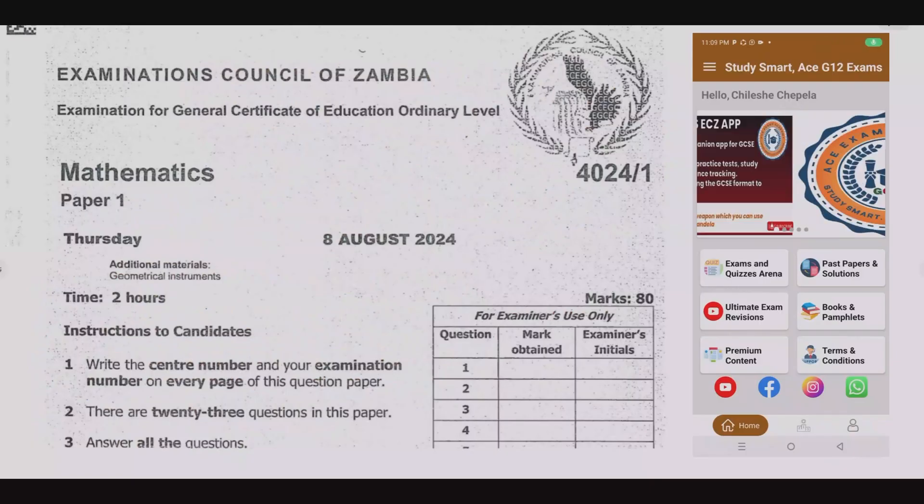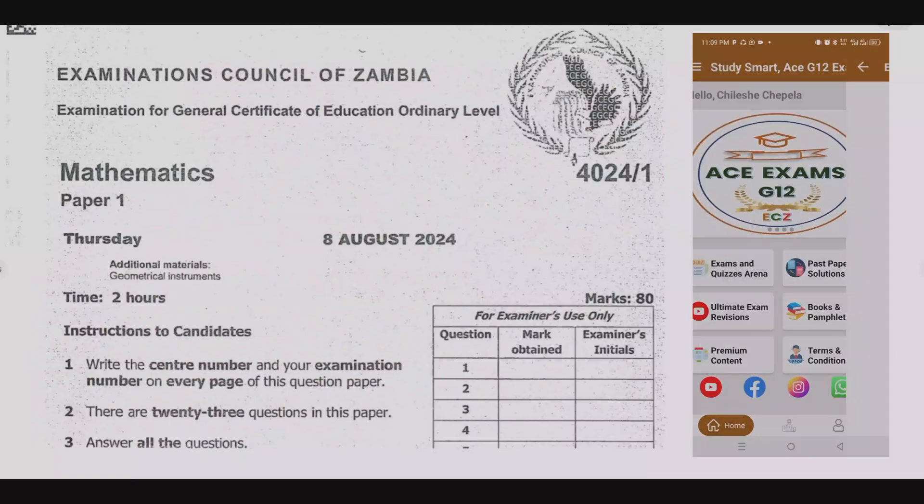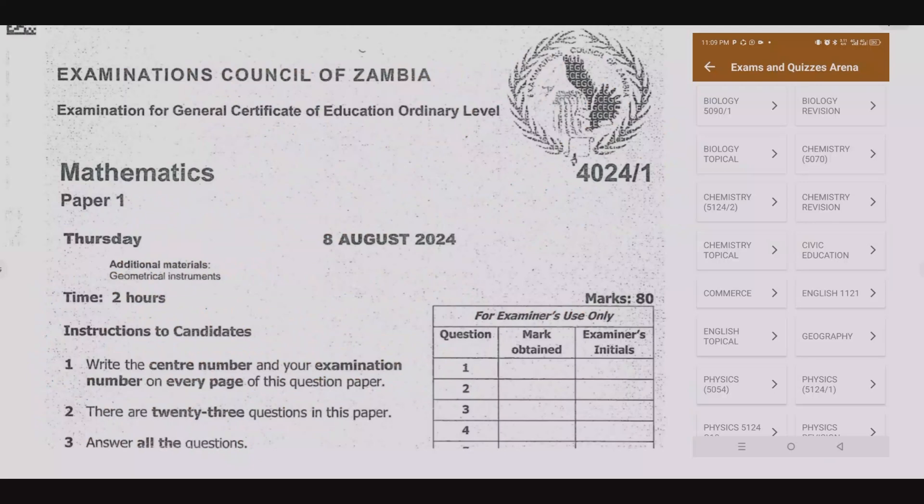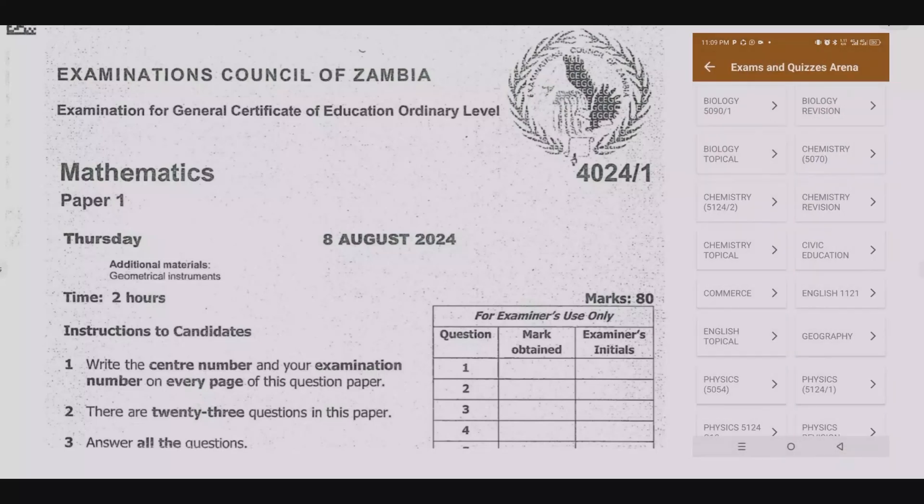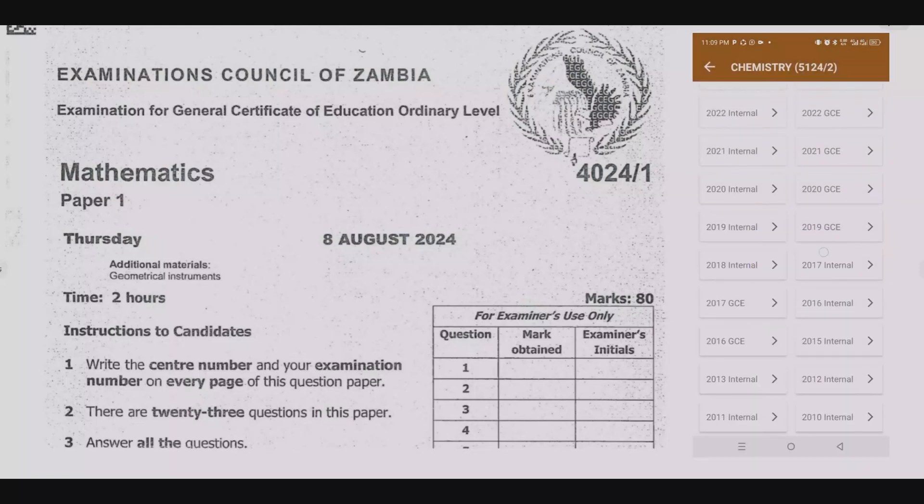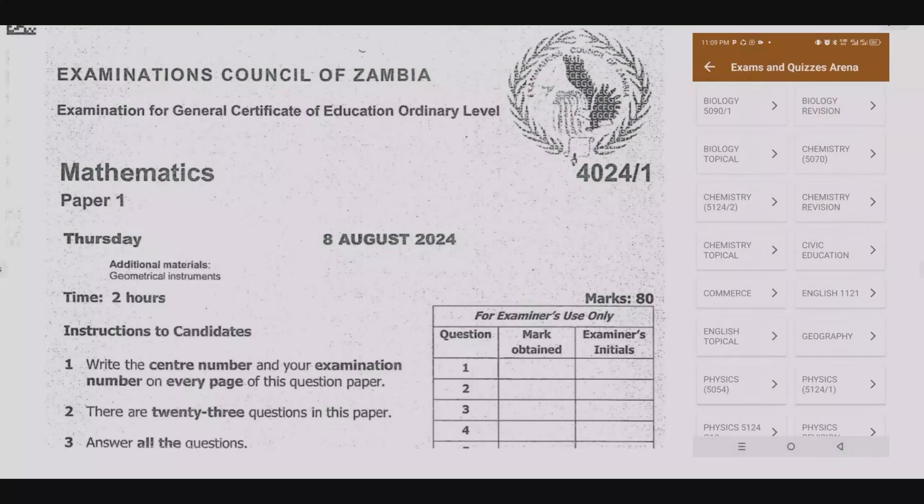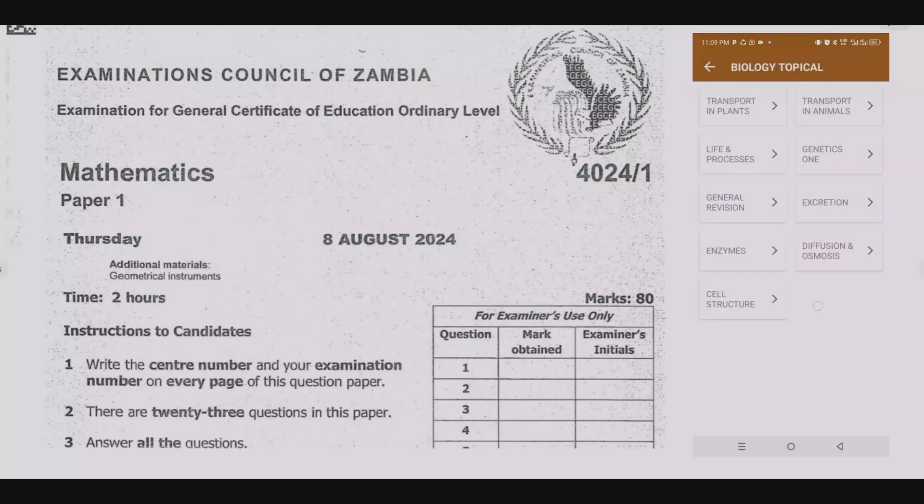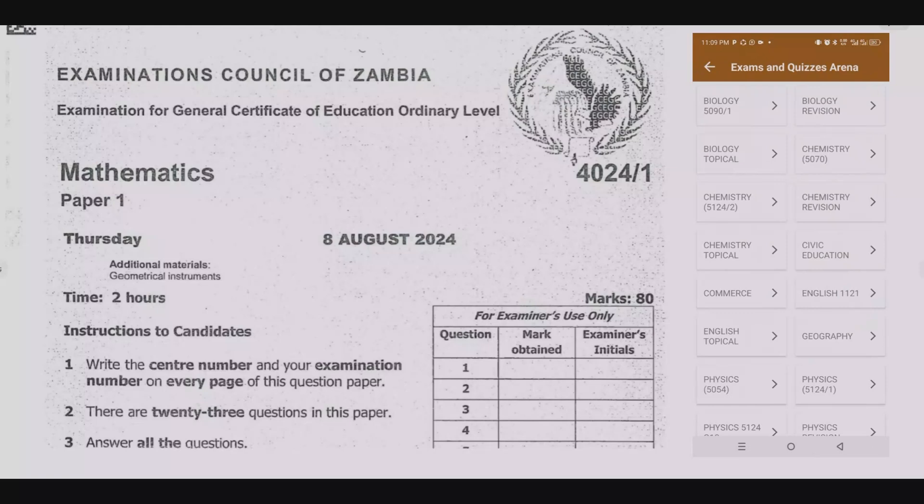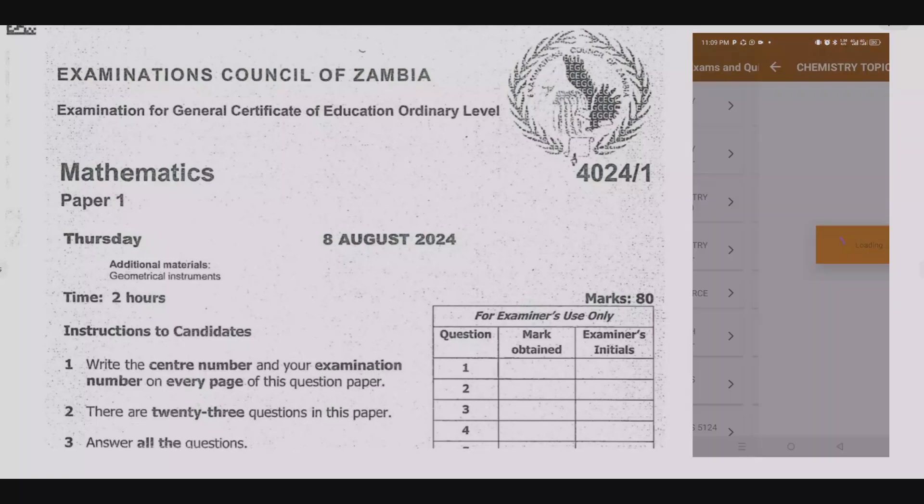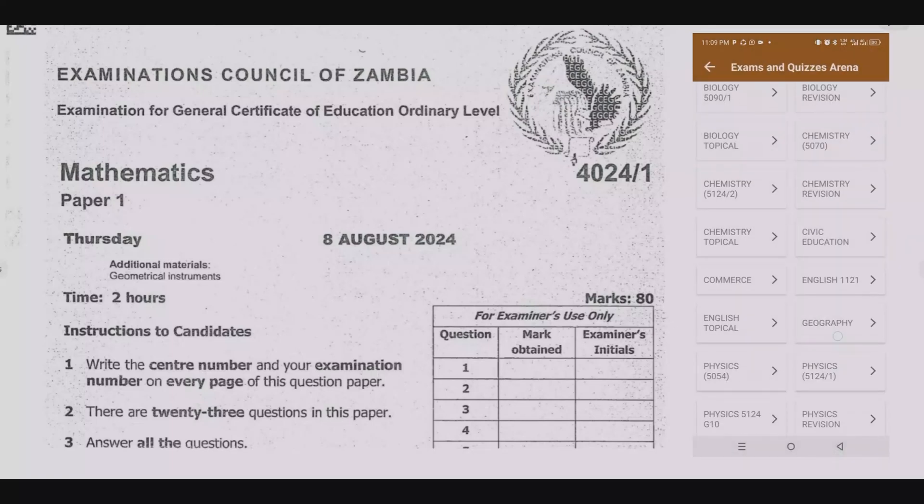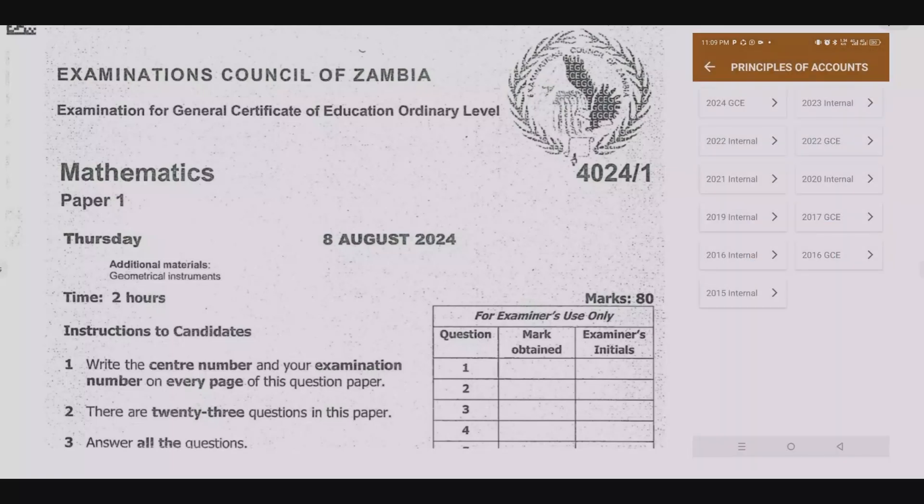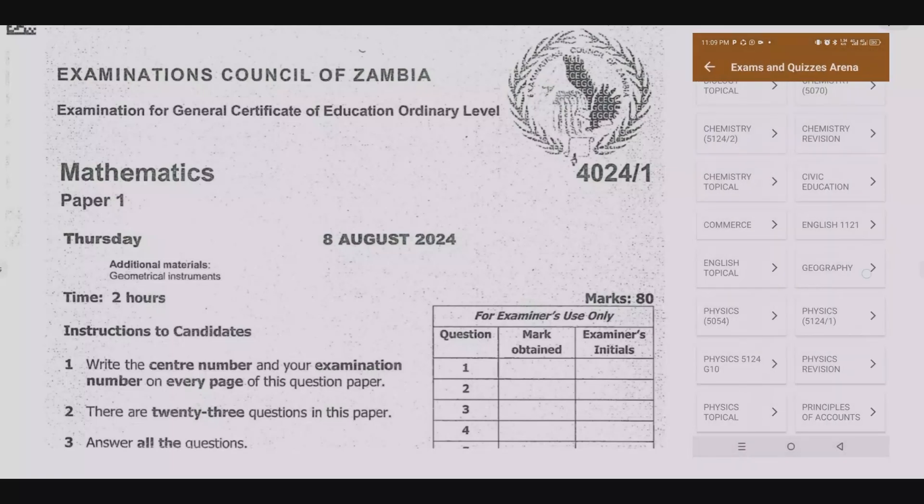Welcome viewers to another episode in a series where we continue looking at the August 2024 mathematics paper 1. If you haven't seen the other episodes, please check out our YouTube channel or download the companion app that you are seeing on the right-hand side of your screen. In this app you are going to find quizzes based on topical exam past papers, over 10,000 questions with free solutions, instant solutions, and detailed explanations.